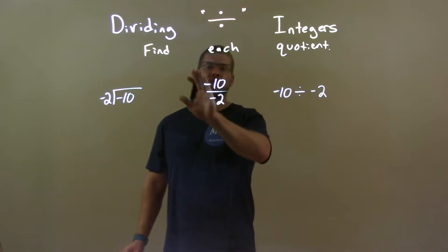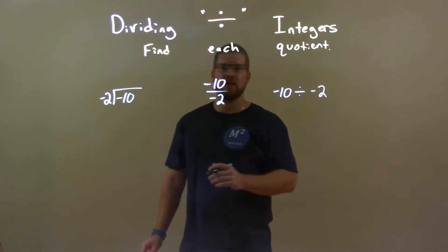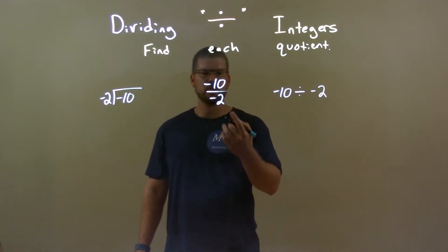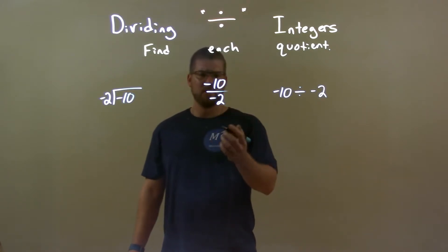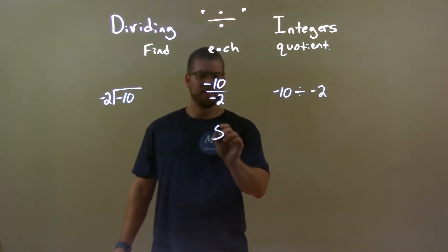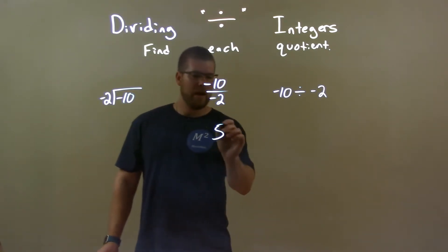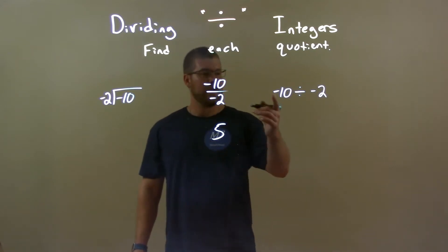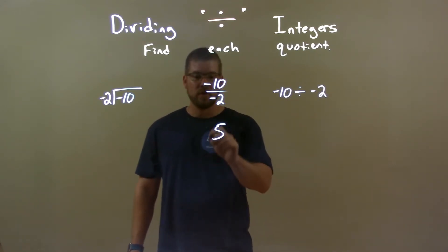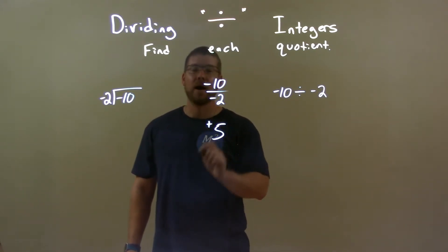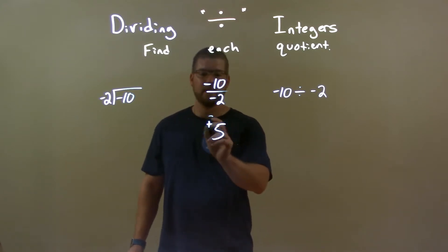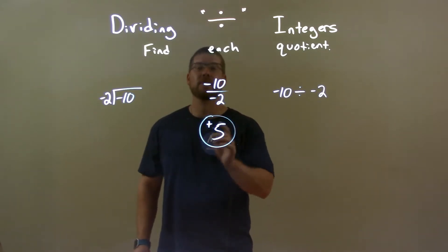For right now, I actually ignore the negatives and just think about 10 divided by 2. Well, 2 goes into 10 five times, right? So 10 divided by 2 is just 5. But now we have some negatives to deal with. A negative divided by a negative, we always know, is a positive. So our final answer, combining the two, is a positive 5.